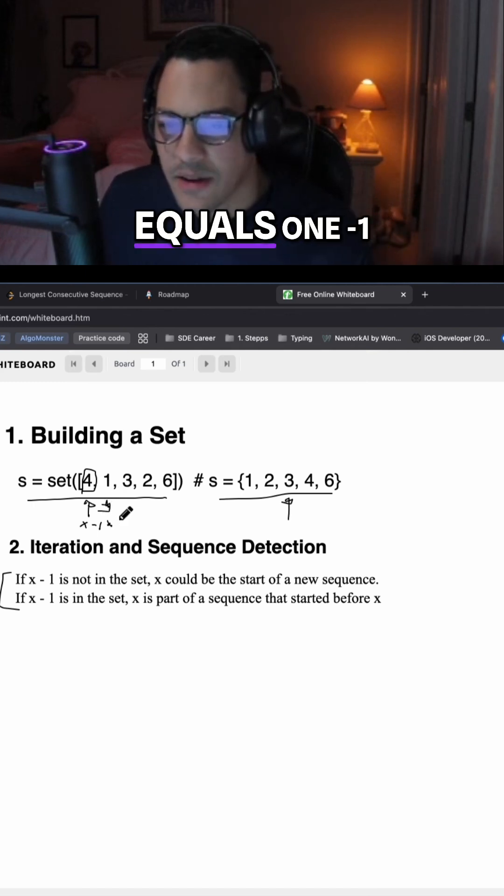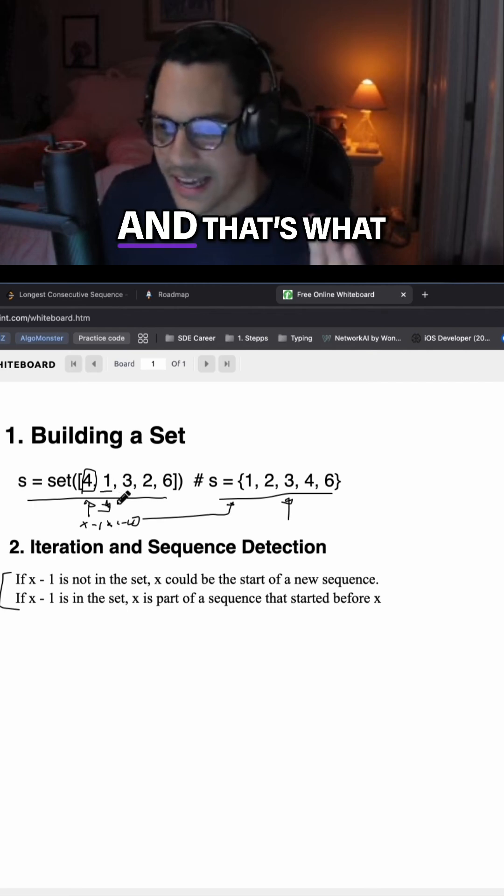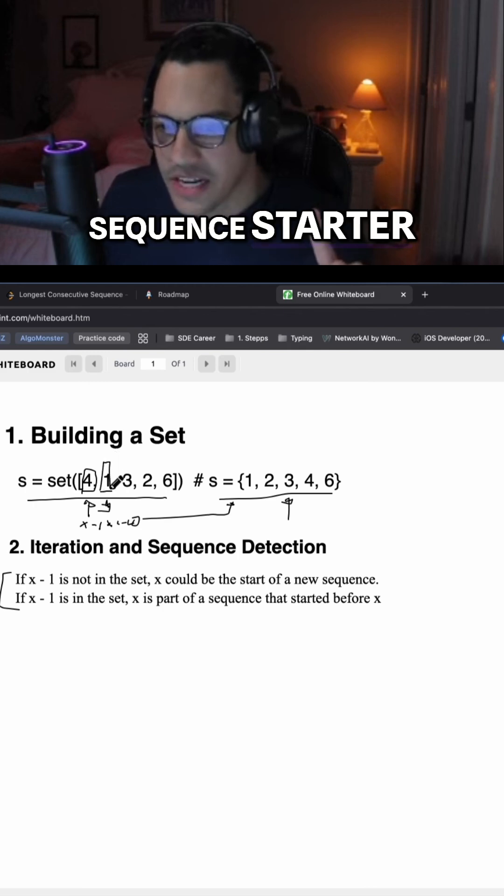x equals 1 minus 1 equals 0. If 0 is in the set, which is not, meaning 1 could be a sequence starter, and that's what we want here. Now we know that 1 could be our sequence starter.